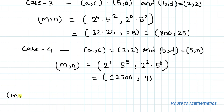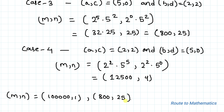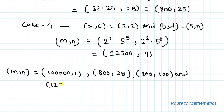So we have 4 positive integer pairs (m, n): (100000, 1), (800, 25), (100, 100), and (12500, 4). These are all the solutions.